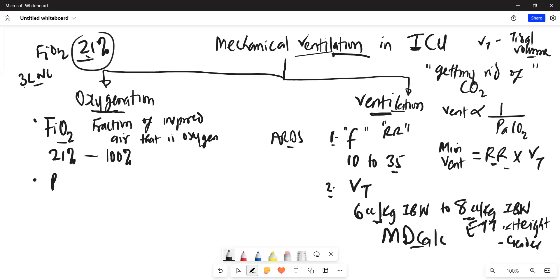And the next part that also helps with oxygenation is our PEEP. So PEEP is positive end expiratory pressure. So I think of PEEP as that pressure that is in the lungs at the end of expiration. So that pressure that is going to be there at the end of exhalation.